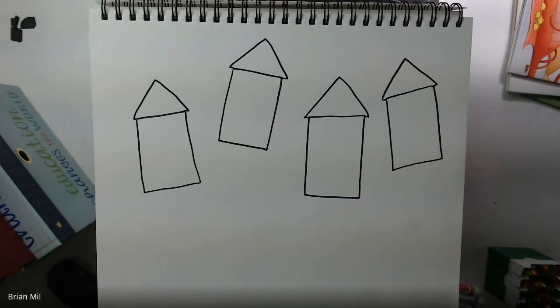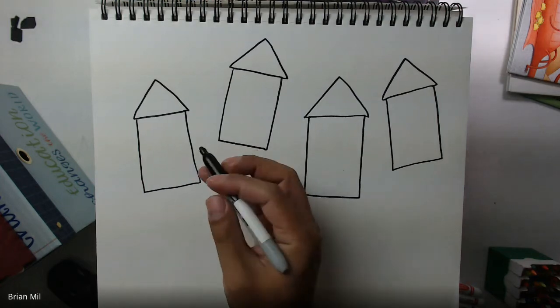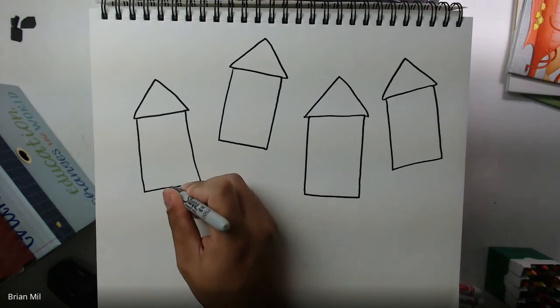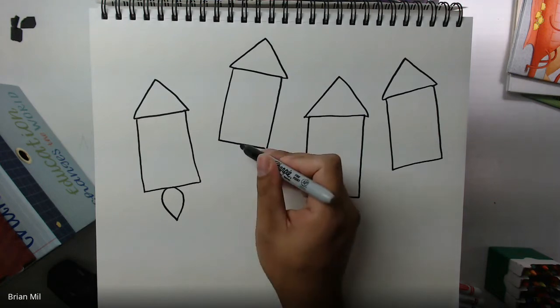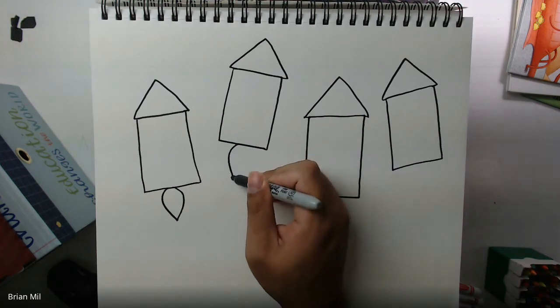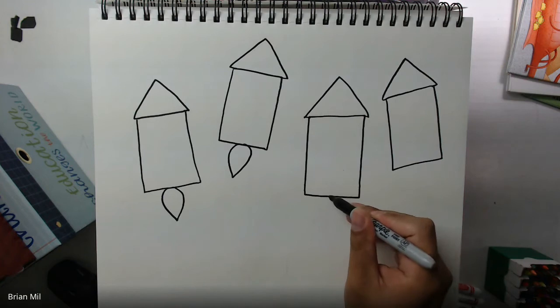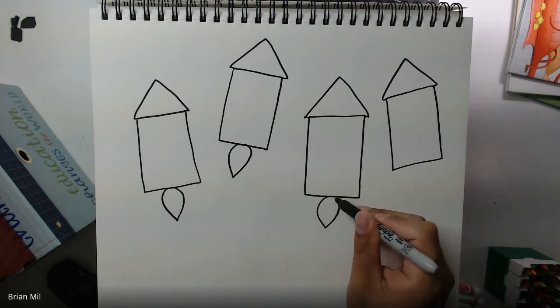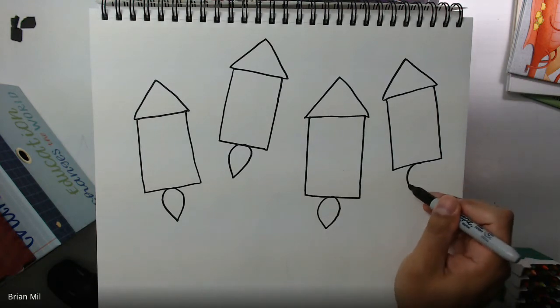Alright, my next one I'm going to draw upside down teardrops to symbolize the flame underneath each of these rockets. So I'm going to draw maybe an upside down triangle, sorry, upside down teardrop over here. And then do it on every single rocket. Upside down teardrops, there we go.